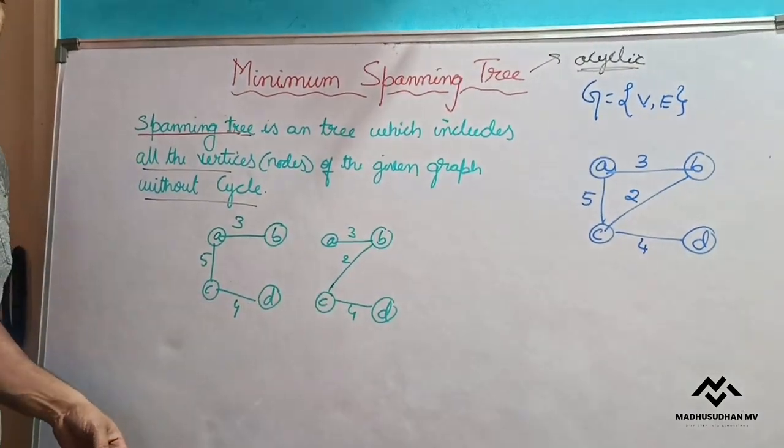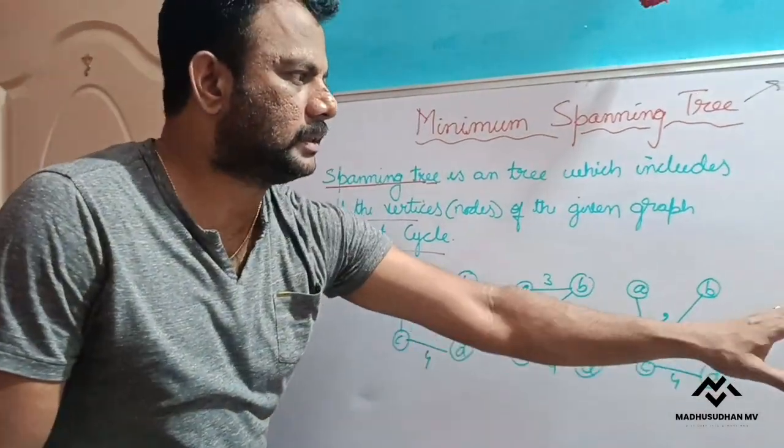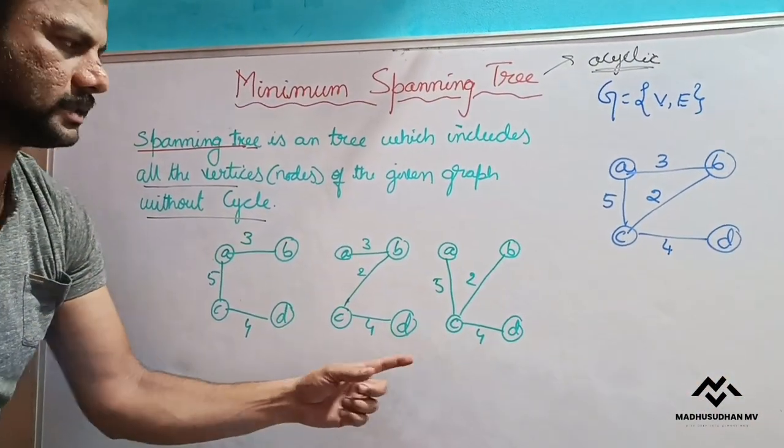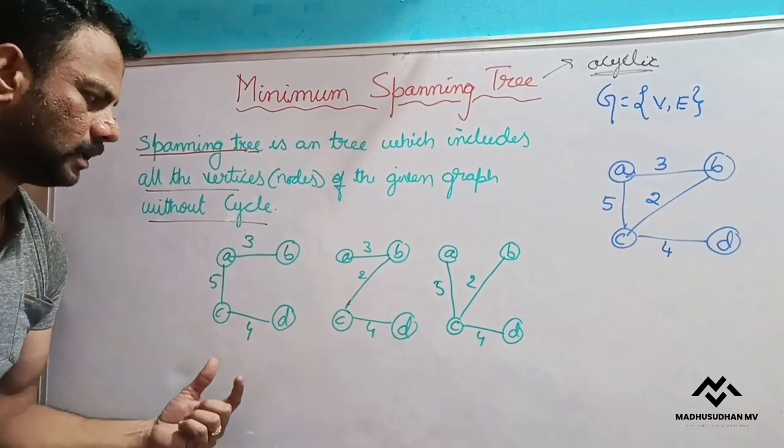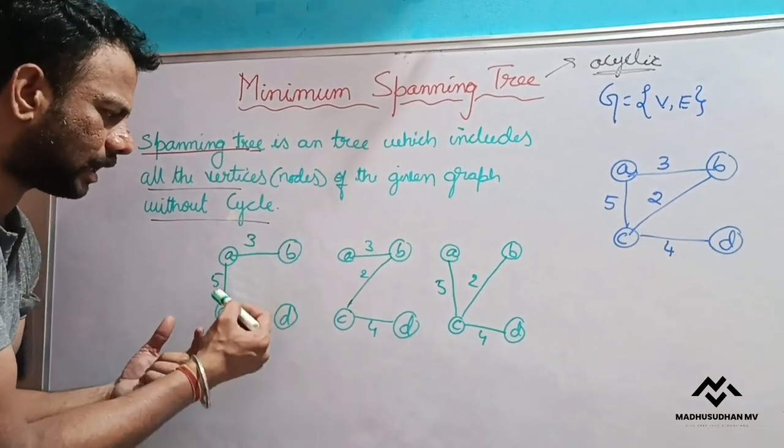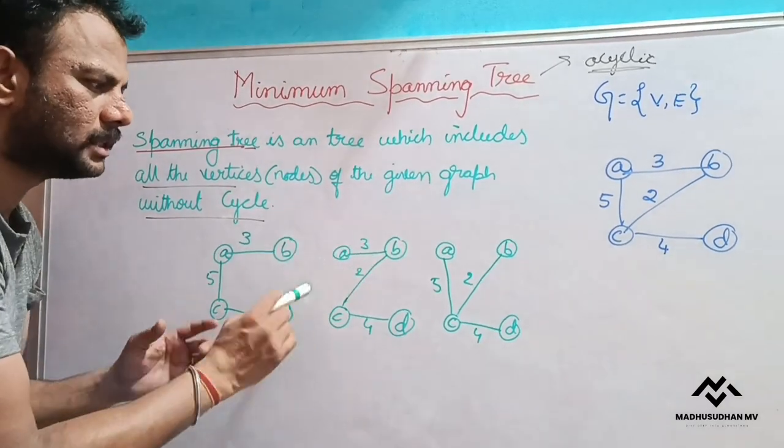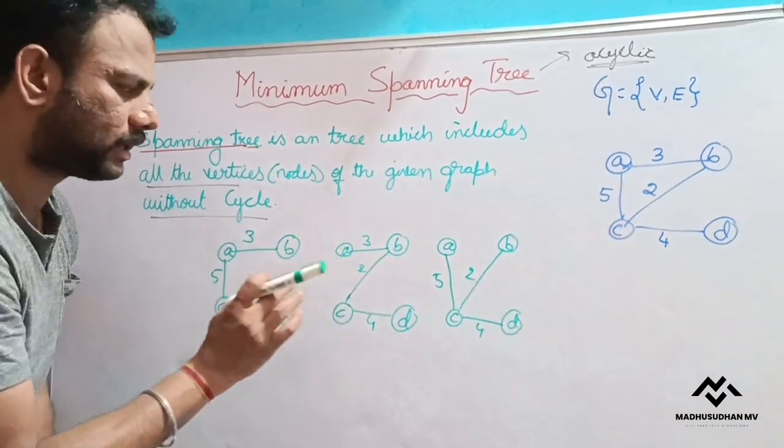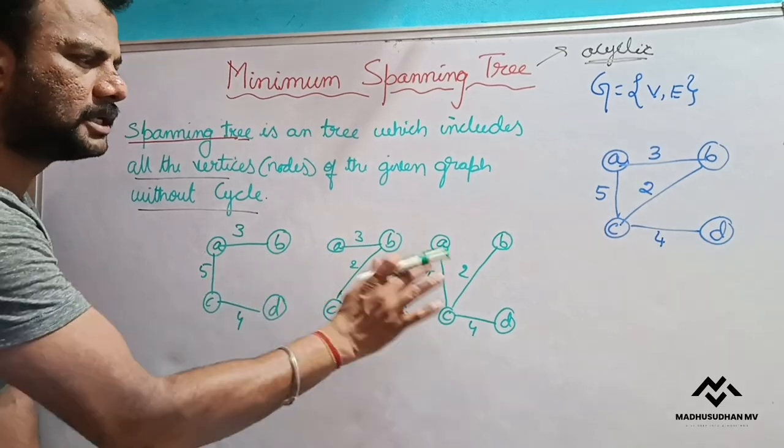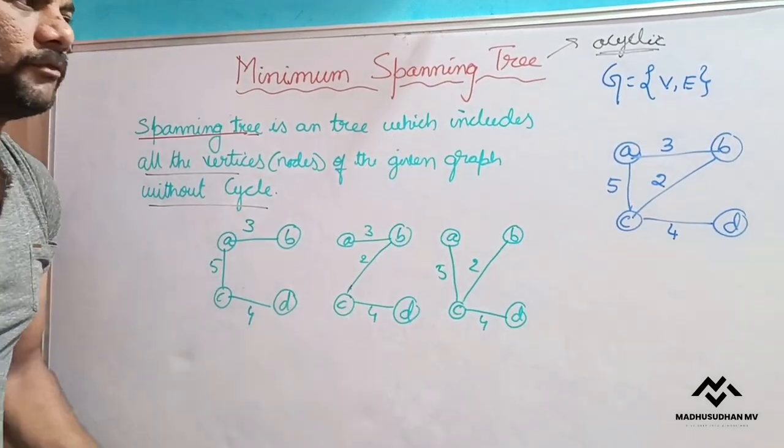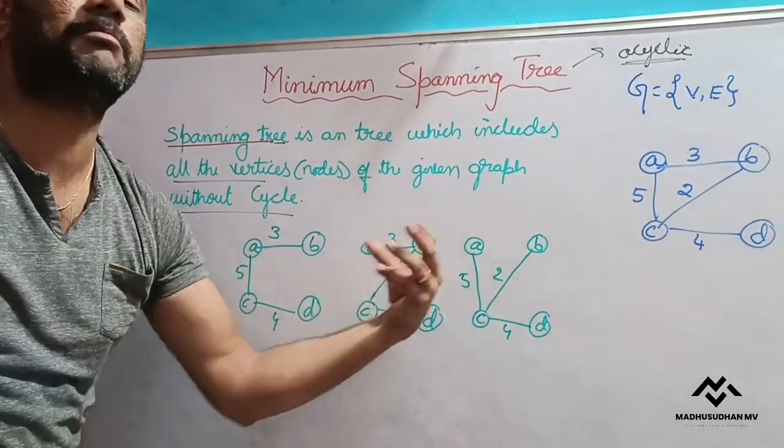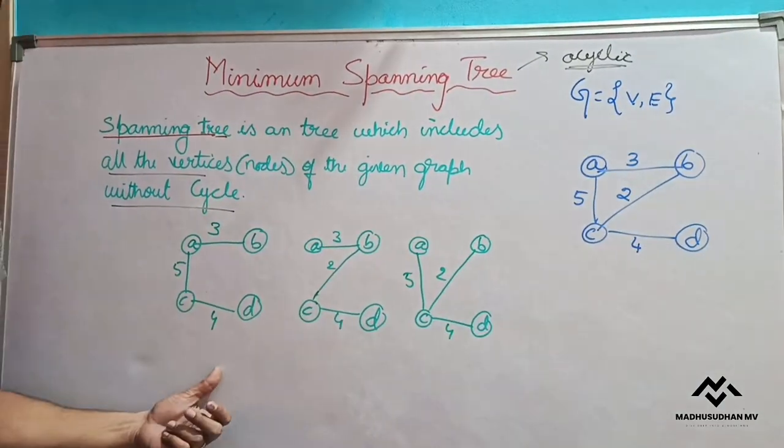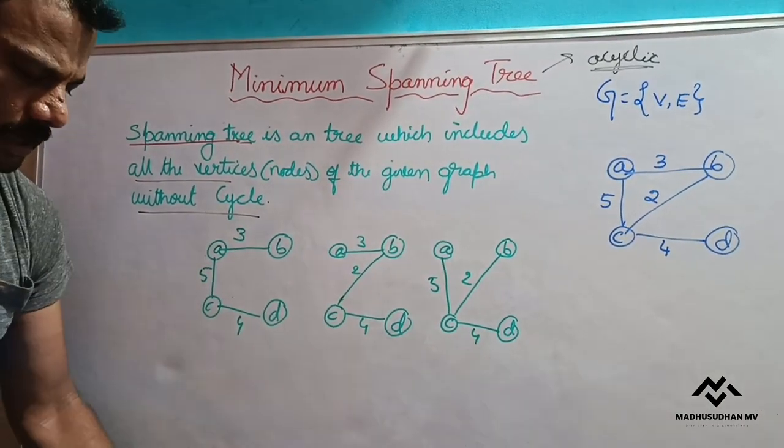So similarly, for this given graph, so these are the three possible spanning trees. See, look at all these spanning trees. All these spanning trees have all the nodes of the given graph, there is no cycle. We include all the vertices, all the vertices are there, no cycle. These are the possible spanning trees for this problem. For some other problem, it may have many number of options. But for this example, we have three possibilities, all these are spanning trees.